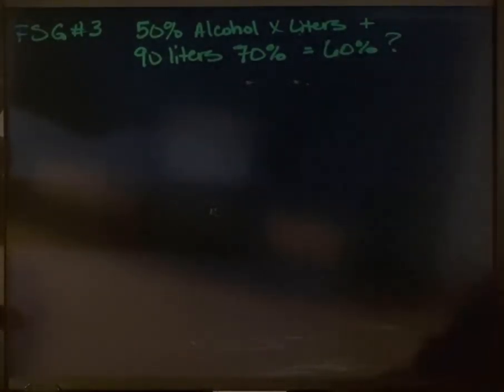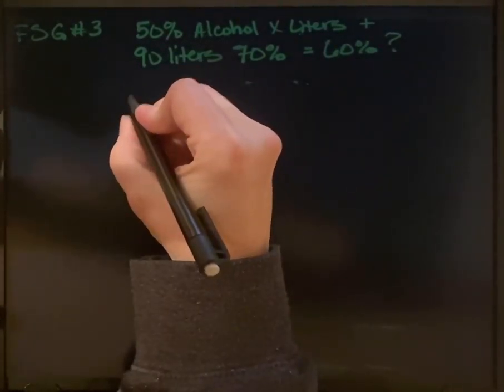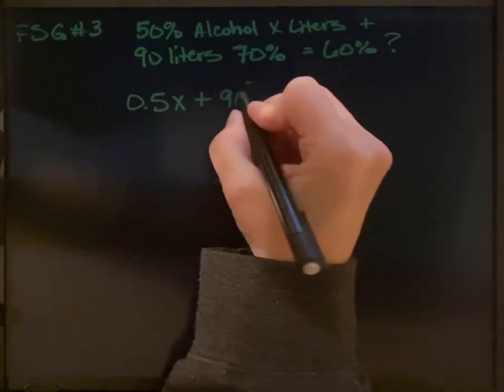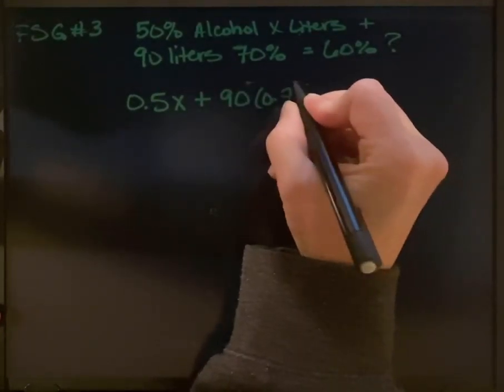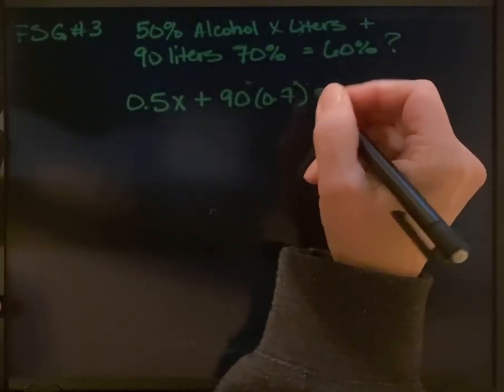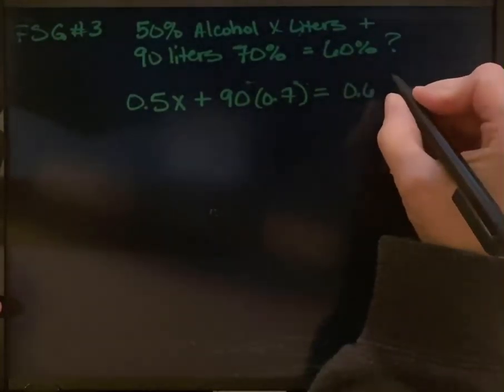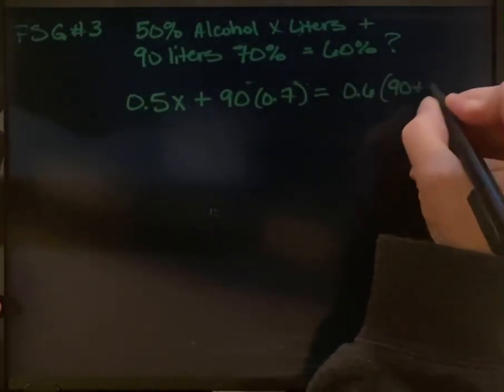So we can start to write down what we know about this. We know that we've got 0.5x plus 90 times 0.7 equals 0.6 times 90 plus x.